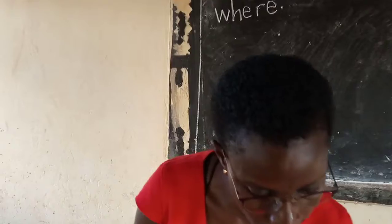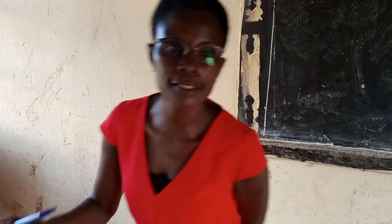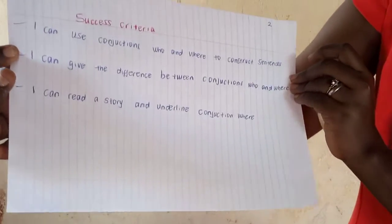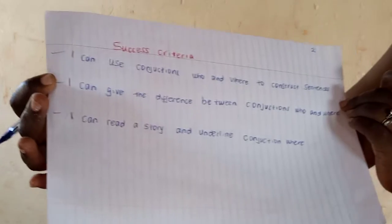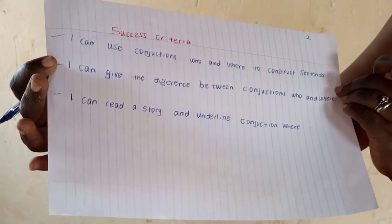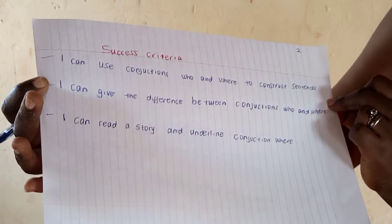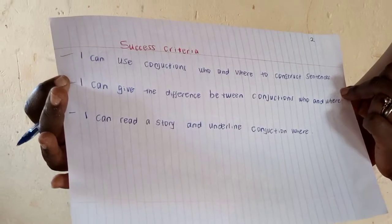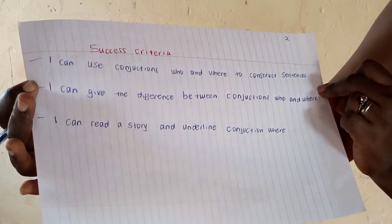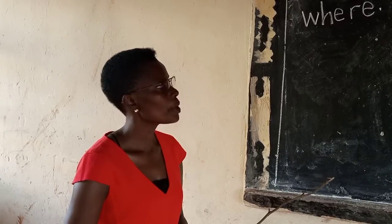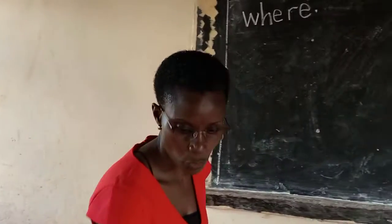Okay, before we do that, can we share the success criteria — what is expected of you? You are expected to use conjunctions "who" and "where" to construct sentences. I can give the difference between conjunctions "who" and "where." And you are also expected to read a story and underline conjunction "where."